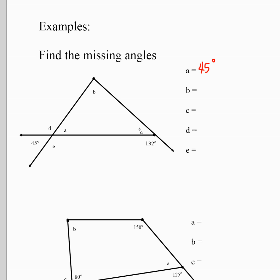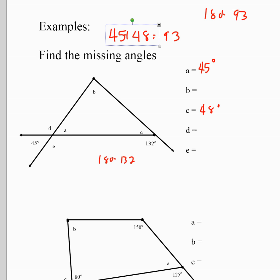Angle C is supplementary to 132 degrees, so we do 180 minus 132 to get 48 degrees. To get angle B, we recognize that A, B, and C form a triangle. We add 45 plus 48 to get 93, then do 180 minus 93 to get the missing measure: angle B equals 87 degrees.